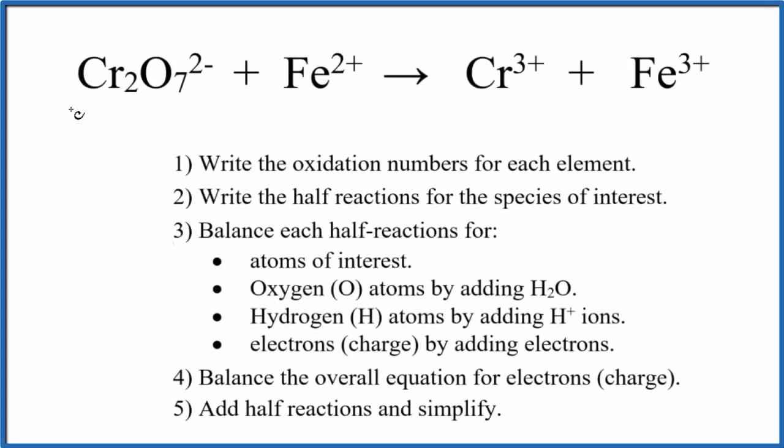Let's balance the redox reaction for Cr₂O₇²⁻ + Fe²⁺ that gives us Cr³⁺ and Fe³⁺. We use the ion electron method and we're going to do this in acidic medium.